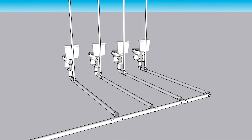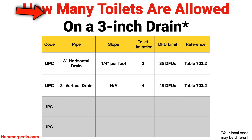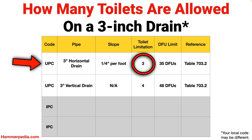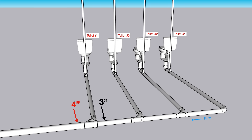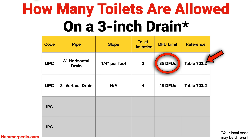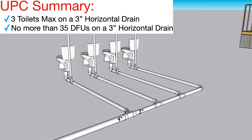How many toilets can go on a three inch drain? The answer varies based on local code. Here's the UPC's take: no more than three toilets are allowed on any three inch horizontal drain. The moment a fourth toilet connects, that horizontal drain needs to increase to four inches. That also assumes you don't exceed the max DFU load permitted by table 703.2 — no more than 35 DFUs can connect to a three inch horizontal drain. A toilet is three DFUs if it flushes 1.6 gallons or less; older toilets that flush over 1.6 gallons are four DFUs.